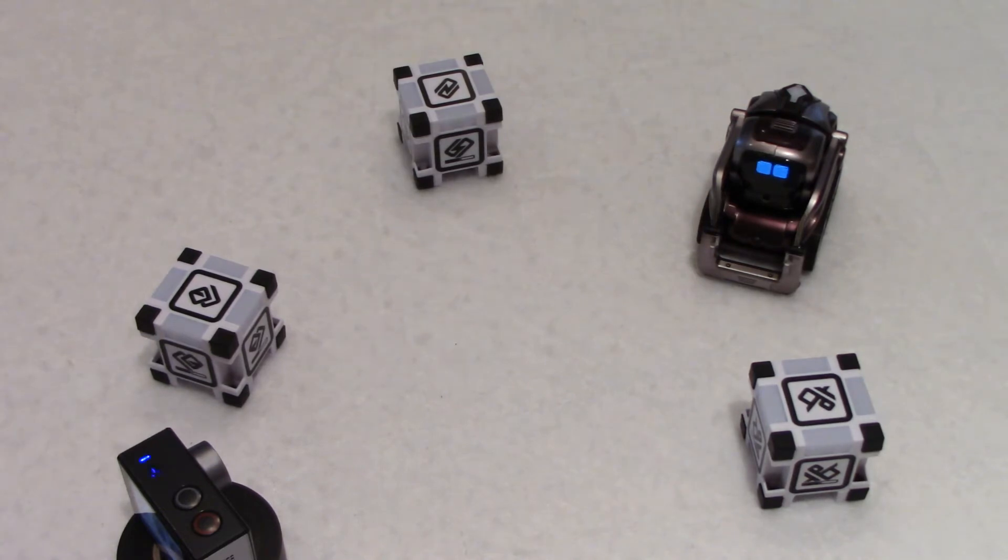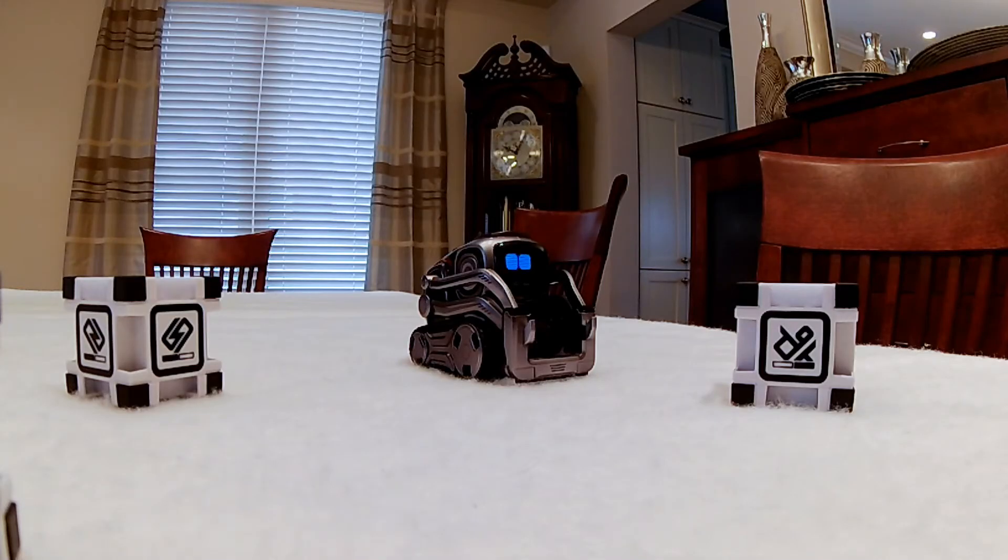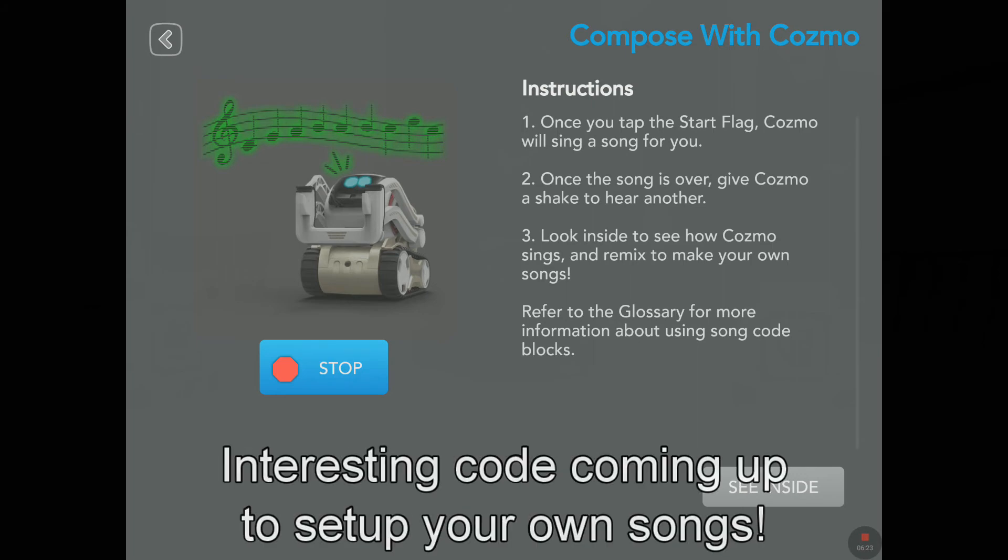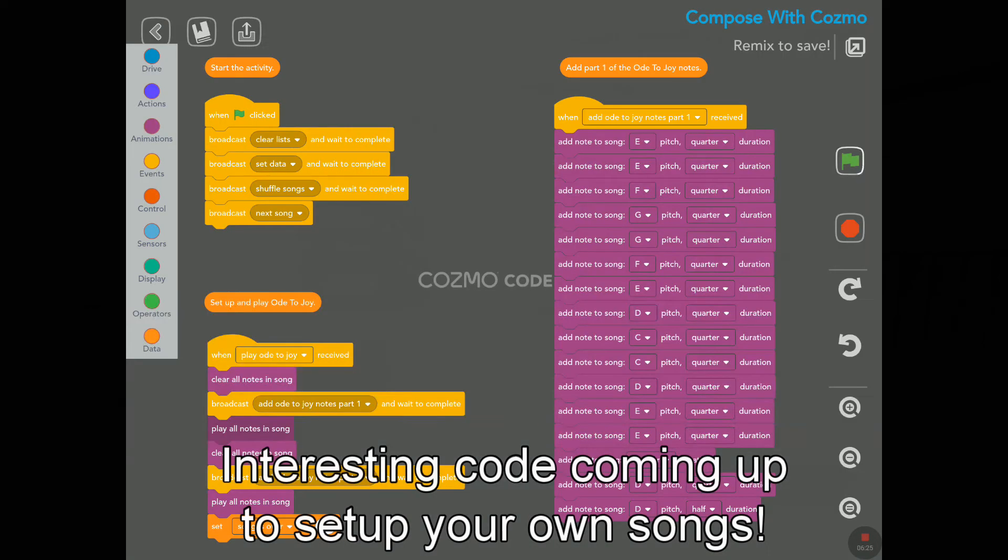So, I was saying, guys, that the sound processing we have access to in Constructor Mode does not allow us to change the pitch, as far as I know. Maybe I'm wrong. You could do that, of course, with the SDK, with the Enki Cosmo SDK, but what we heard now was the change of pitch when Cosmo, well, to allow Cosmo to sing. So, let's tap on see inside, and let's see here.